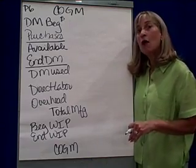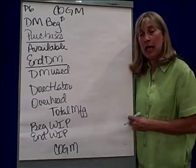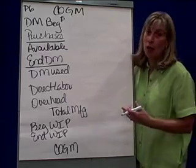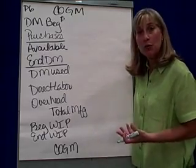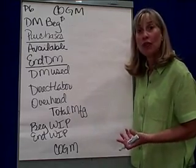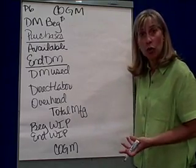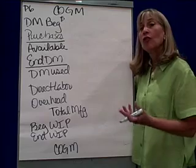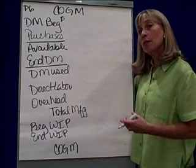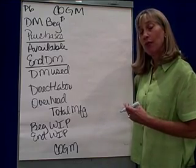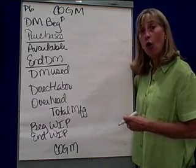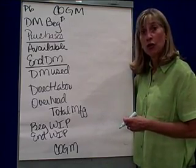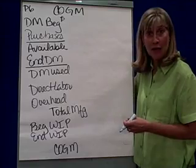It's now time to project what the year-end numbers look like. The first year-end number we have to do is the cost of goods manufactured.